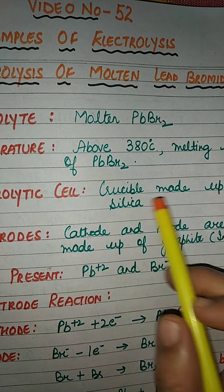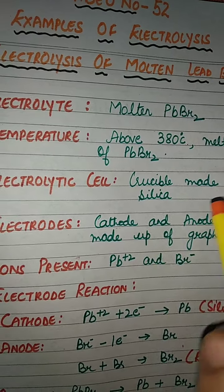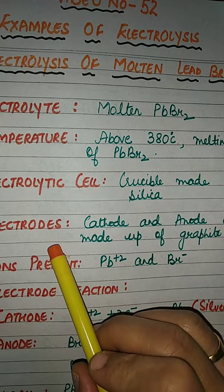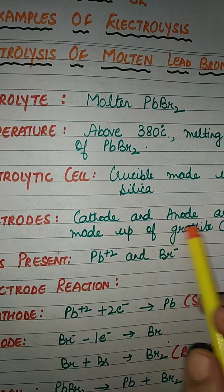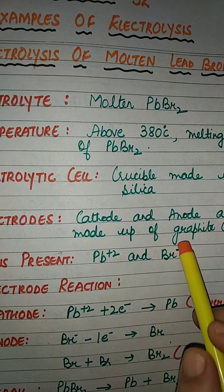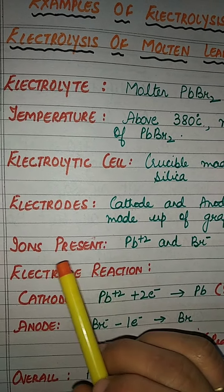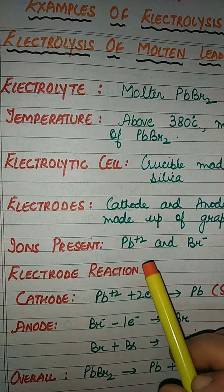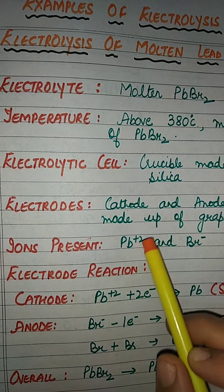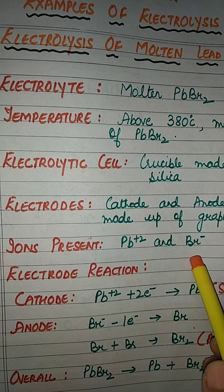The electrolytic cell is made up of silica — it is a crucible made up of silica. Both cathode and anode electrodes are made up of graphite. The ions present in the electrolyte are Pb²⁺ and Br⁻.